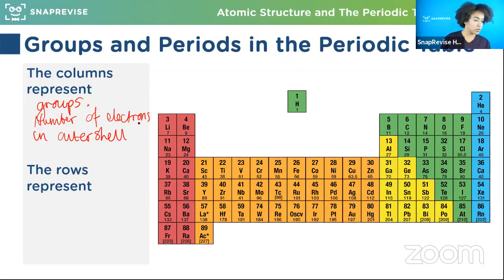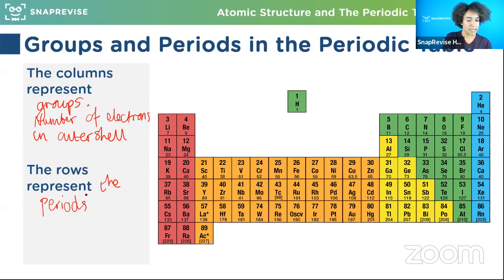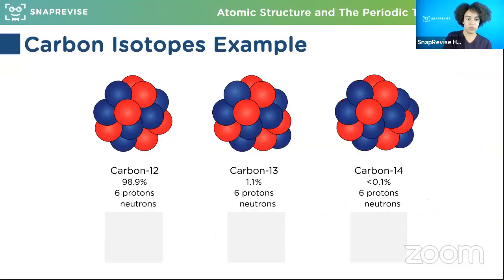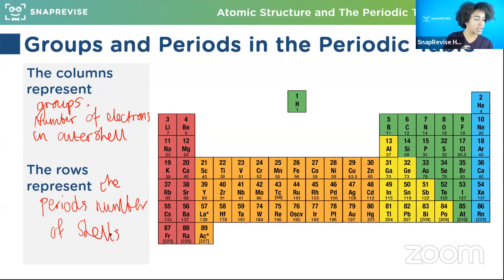What do the rows - the horizontal bits - mean? Rows are periods. What are the periods? Yes - the number of shells. Periods are the number of shells.